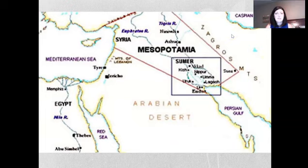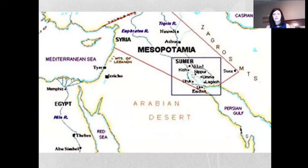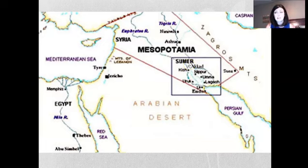Here's a map showing the area we're discussing. Mesopotamia sits right between the Tigris and Euphrates — a wonderful area for farming, irrigation, and civilization. You can see Sumer, or Sumeria, as the biggest city-state in the area, along with some of the other smaller ones at the time.